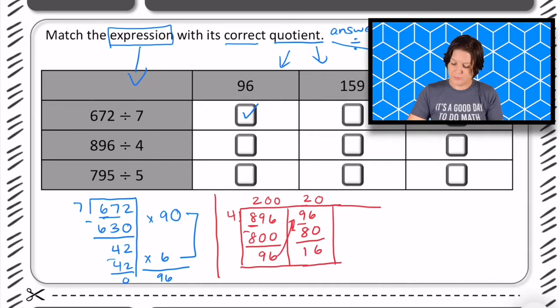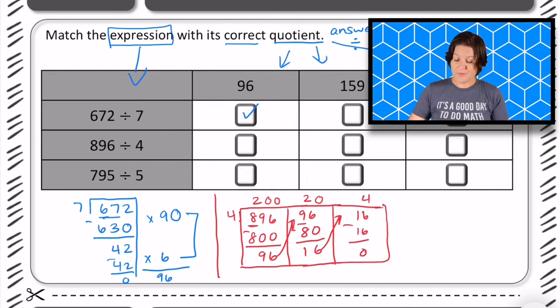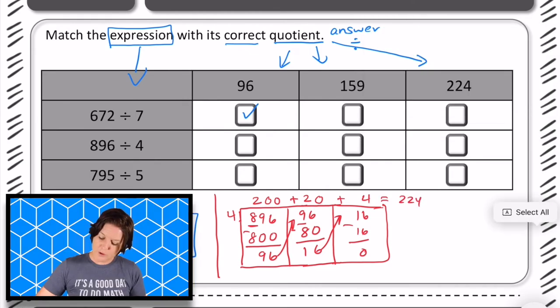Subtract and we get 16. Sorry, I forgot to show that I'm bringing this up, bringing my what's remaining up there. Now 4 goes into 16 four times, which is 16. Subtract and we get 0. Which is awesome. We don't always get 0. Sometimes we have something left over that's called a remainder. And what we're going to do is add these up here. So we have 200 plus 20 plus 4, which equals 224. Which if we're going over would be this column right there.